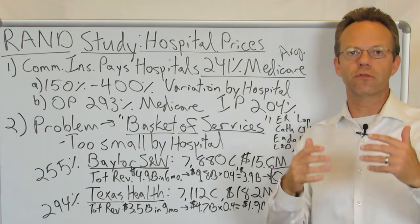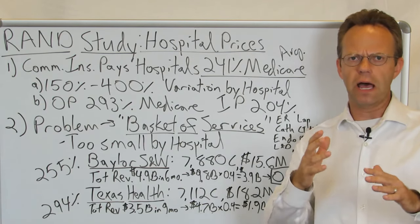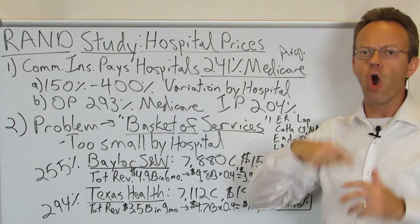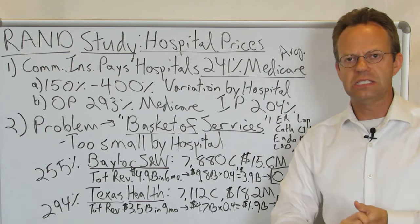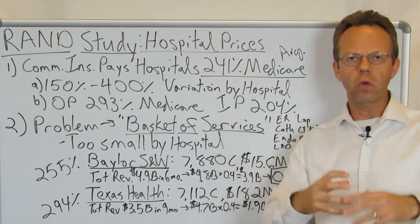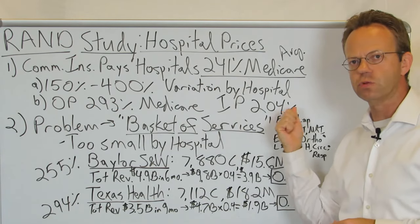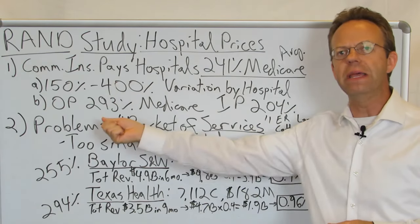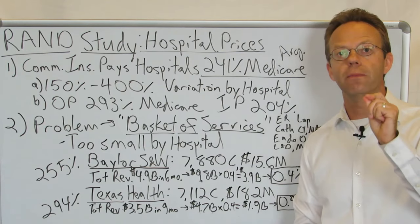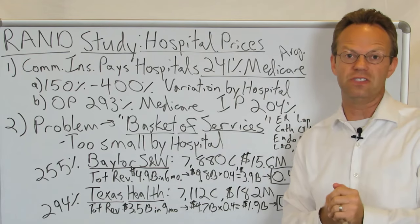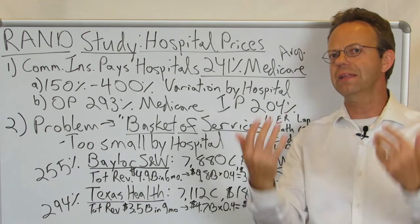This is super important because we've known for a long time that commercial insurance pays hospitals much more than Medicare. We're not going to debate whether Medicare is adequate compensation today. The topic is: what can employers take from this data? Outpatient services were 293% of Medicare for commercial insurance, and inpatient services were 204%. On a relative basis, outpatient services are much more expensive than inpatient. That's important because the majority of services at a hospital these days are done on an outpatient basis — and a lot of surgeries for commercial insurance patients under age 65 are outpatient too. Just because something is outpatient doesn't make it less expensive — it actually might make it more expensive.